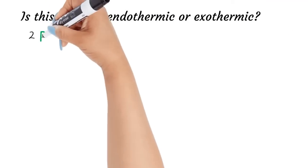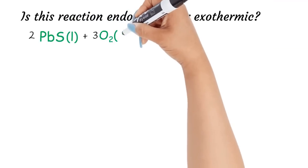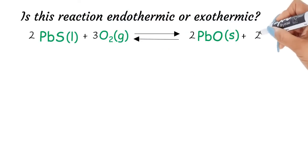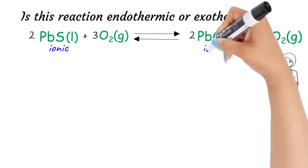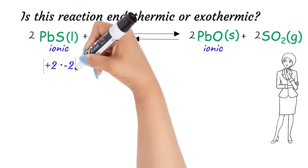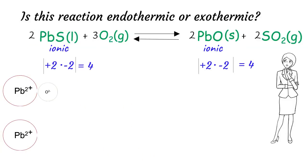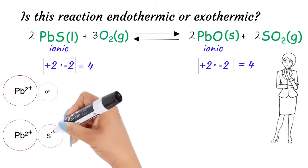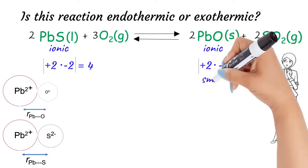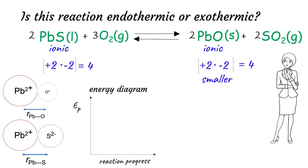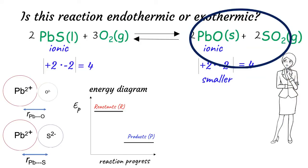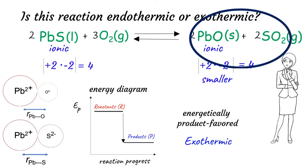Let's consider the reaction between lead sulfide and oxygen. Here the reaction produces lead oxide and sulfur dioxide gas. On both reactant and product sides there are ionic compounds with stronger ionic bonds. Both ionic compounds — lead sulfide and lead oxide — have a charge product of 4. However, the anion of lead oxide, the oxide anion, is smaller than the anion of lead sulfide, the sulfide ion. This makes the distance between the ions in lead oxide smaller than that in lead sulfide. Therefore, the ionic bond of lead oxide on the product side is stronger with lower potential energy than the ionic bond of lead sulfide on the reactant side. Thus, we can expect products to be more energetically stable than the reactants, making the reaction energetically product favored. Therefore, we can predict this reaction to be an exothermic reaction with a negative delta H.